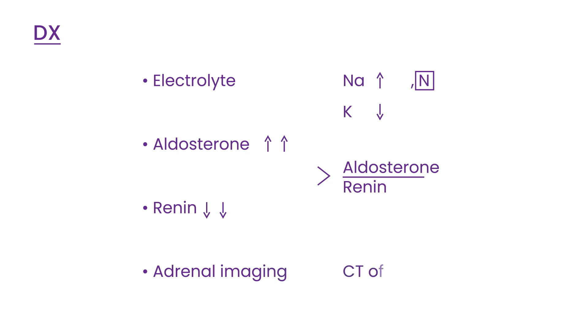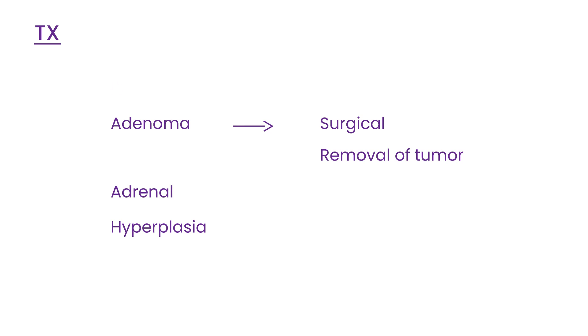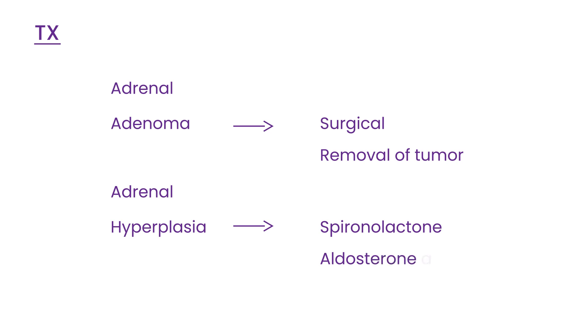Most commonly, a CT of the abdomen is done to detect the tumor. For treatment: if it was an adenoma, the treatment is surgical removal of the tumor. If the cause was adrenal hyperplasia, that's treated with a medication called spironolactone, which is an aldosterone antagonist. It helps block the action of the excessive aldosterone levels present in adrenal hyperplasia.